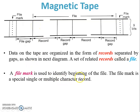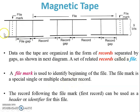A file mark is used to identify the beginning of a file. One file ends and a new file starts from the next file mark. A special single or multiple character record will be in the file mark. The record following the file mark, the first record, can be used as a header or identifier for the file.